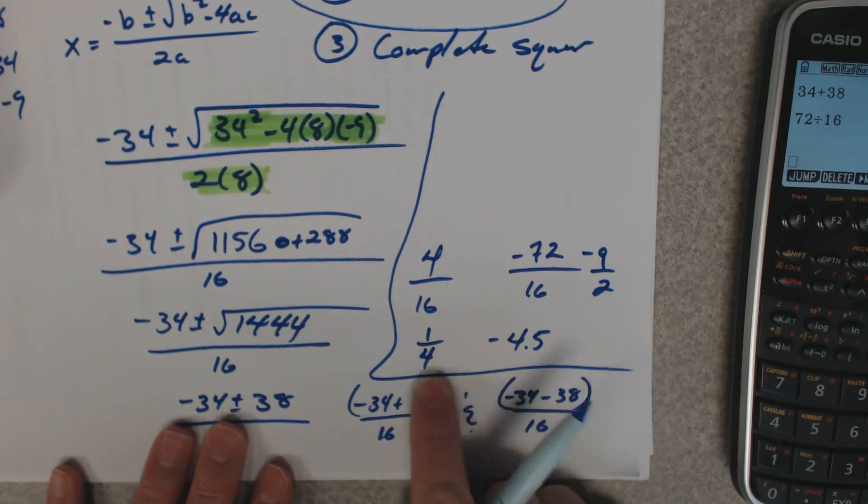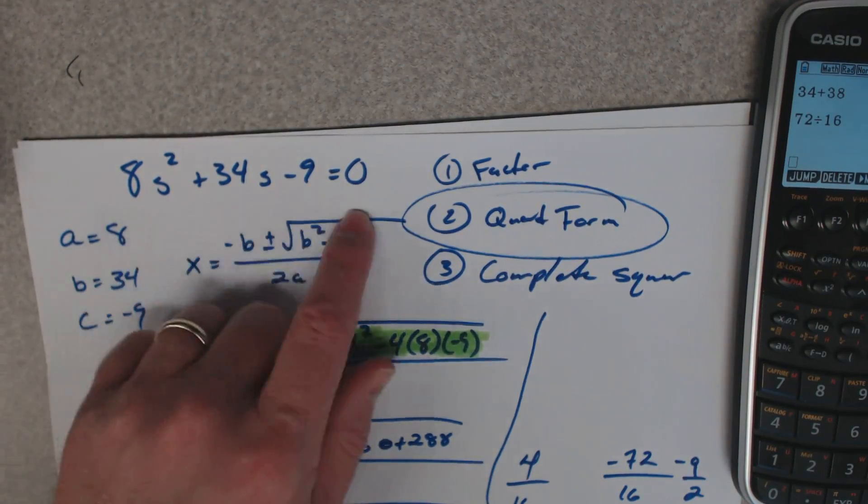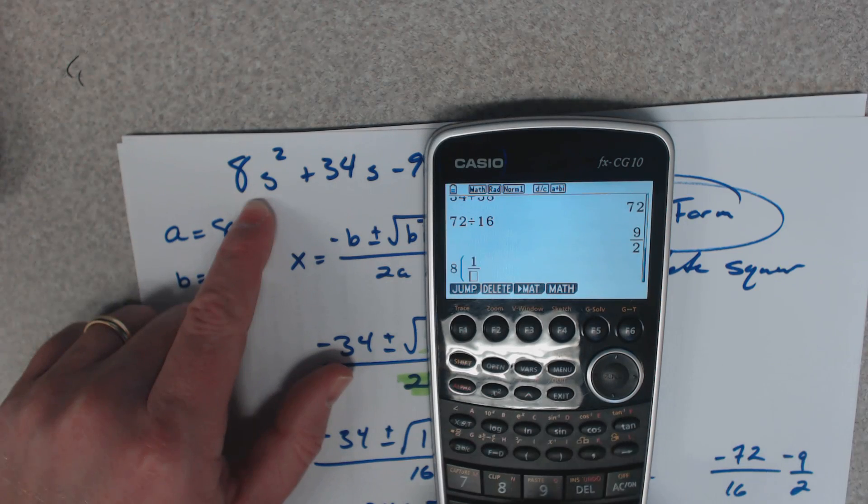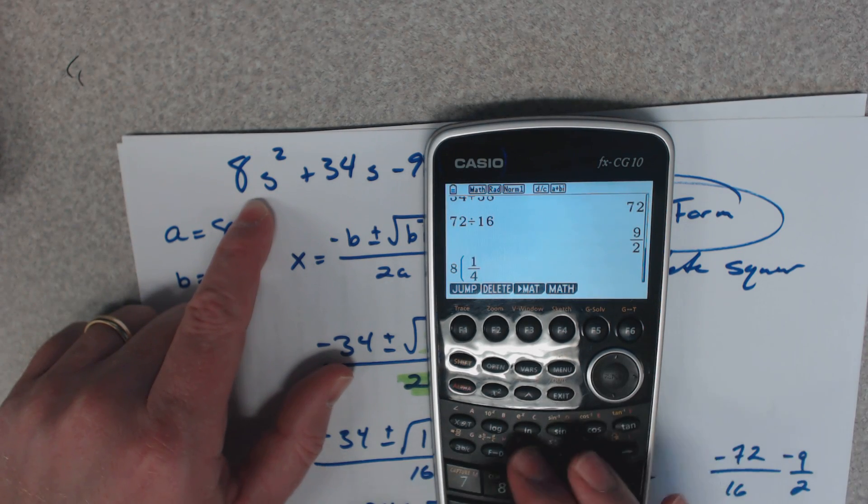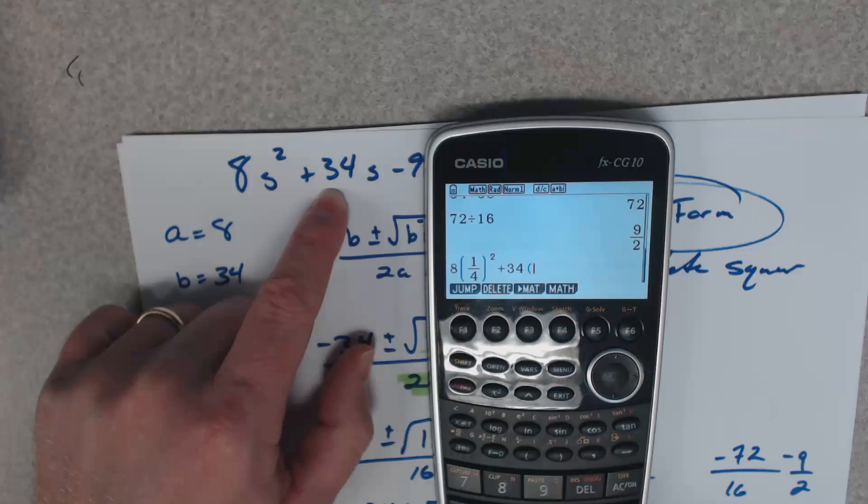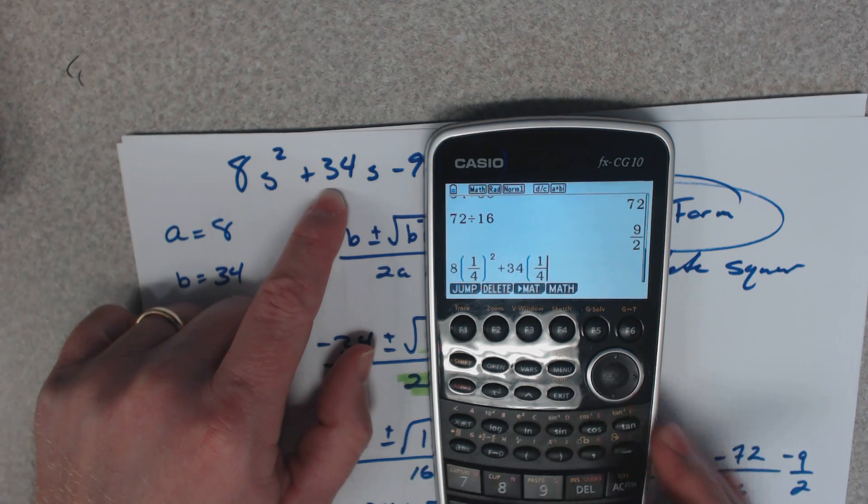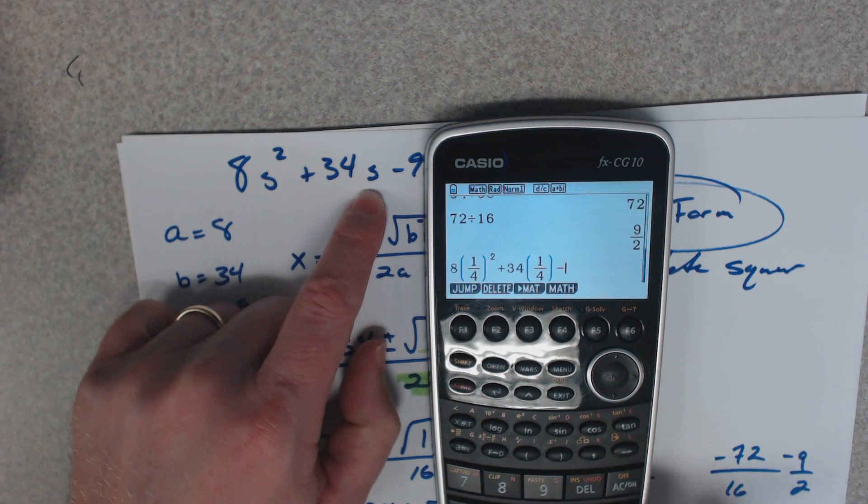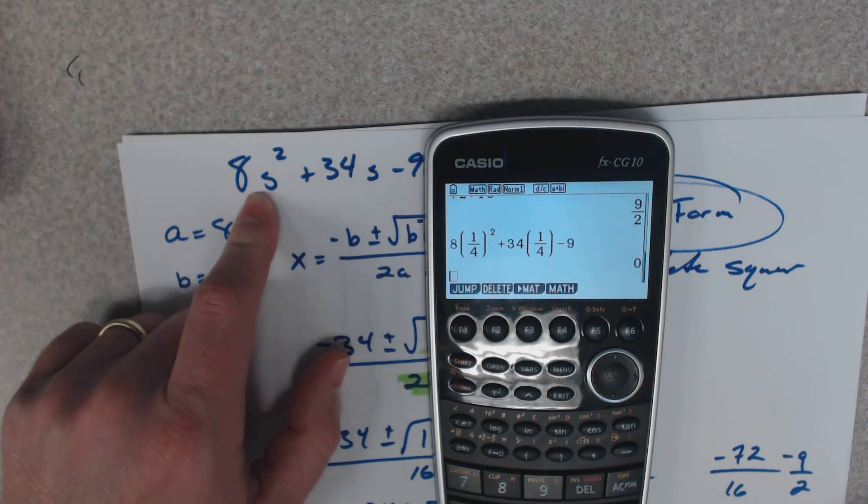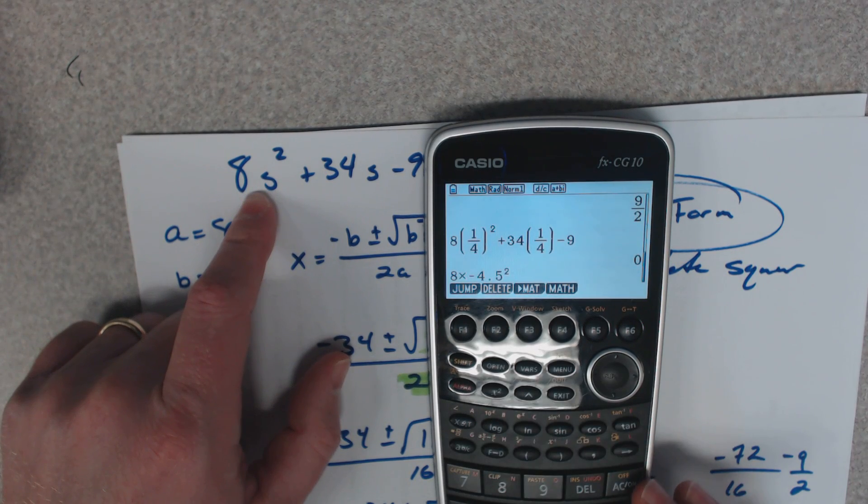So the idea here is these two values are the two values you can plug in up here and get zero. So let's check it out. Let's make sure. So, 8 parentheses, 1 fourth squared plus 34 times 1 fourth minus 9, zero. Awesome.